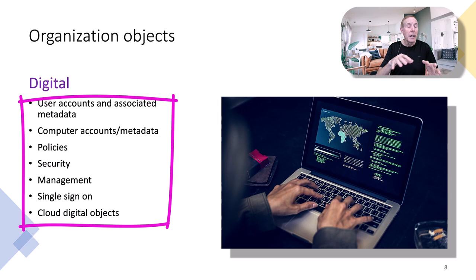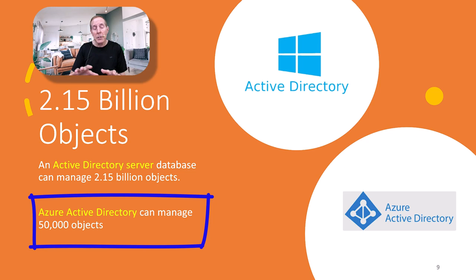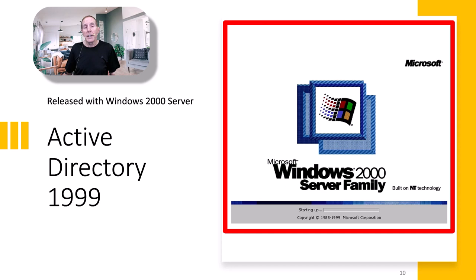Active Directory server database can manage up to 2.15 billion objects. Azure Active Directory can manage about 50,000 objects. Notice the big difference between Azure Active Directory, hosted in the cloud, and Active Directory, hosted on a server. Active Directory was released with Windows Server 2000 in 1999.